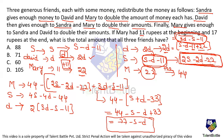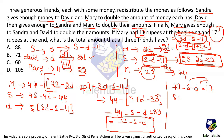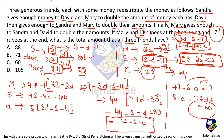Since Mary has 17 rupees at the end: 77 − s − d = 17, so s + d = 60. The total amount for all three friends is s + d + 11 = 60 + 11 = 71 rupees. The answer is option B.